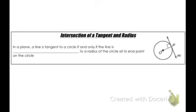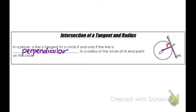Intersection of a tangent and radius: in a plane, a line is tangent to a circle if and only if the line is perpendicular to a radius of the circle at its endpoint. The tangent line on the outside intersects radius OP, forming a right angle at the intersection point. We can say that line MP is tangent because it intersects the circle at a right angle.